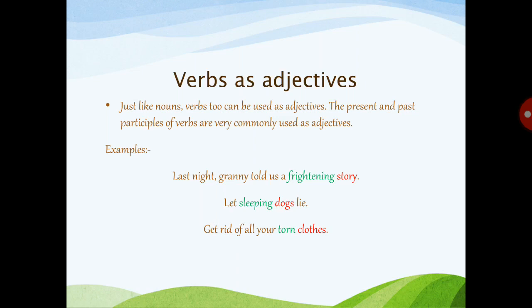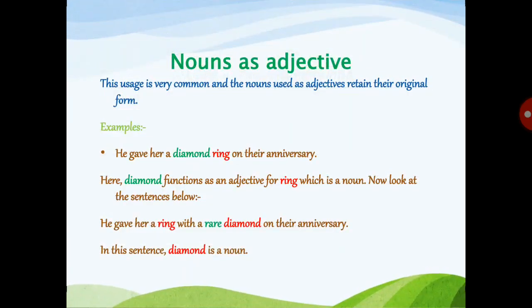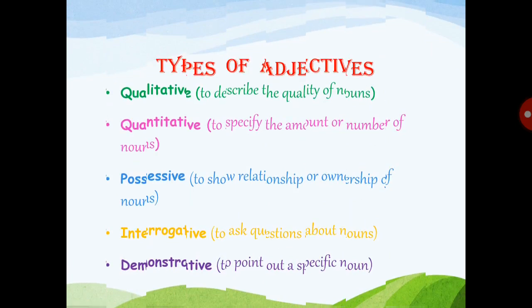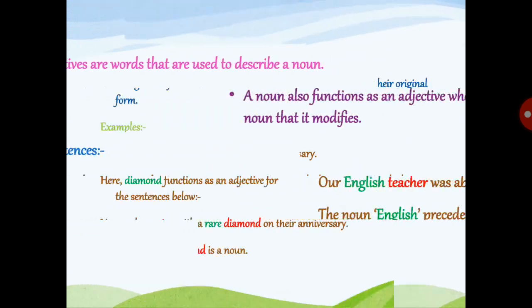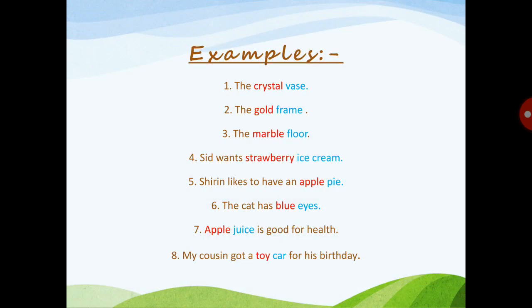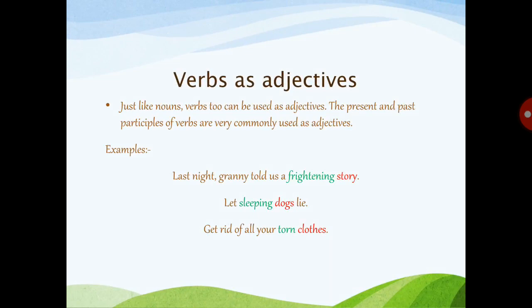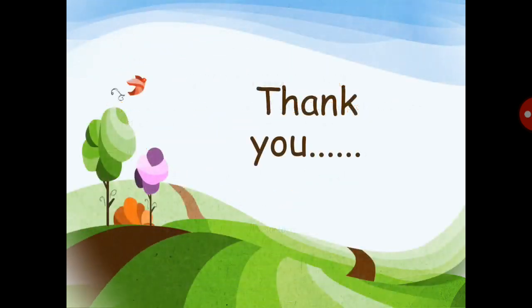So for today, we have seen a quick recap of types of adjectives — qualitative, quantitative, possessive, interrogative, and demonstrative. We have seen what adjectives are and covered nouns as adjectives with several examples. We have also seen verbs as adjectives. Tomorrow we'll take a quick recap of today's lesson and then learn about present participles and past participles as adjectives, plus the order of adjectives. Thank you everyone, have a nice day.